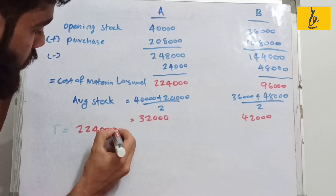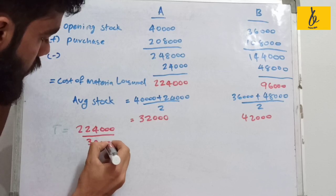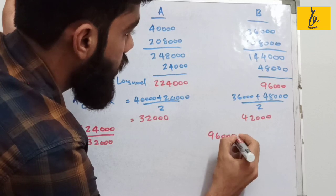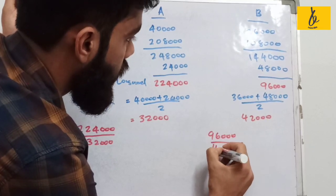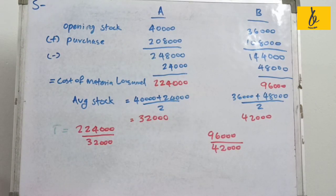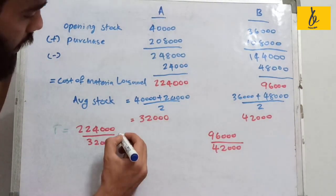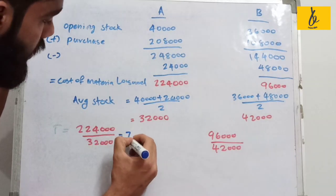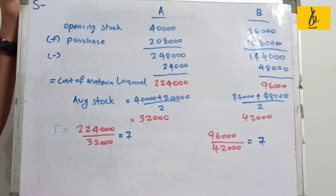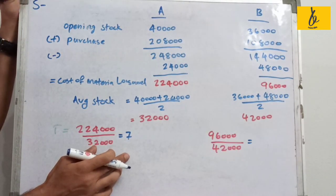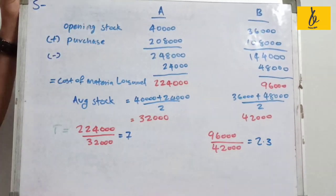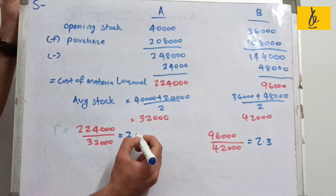The inventory turnover ratio for Material A is 2,24,000 divided by 32,000. This gives 7 times. For Material B, the inventory turnover ratio is 2.3 times.